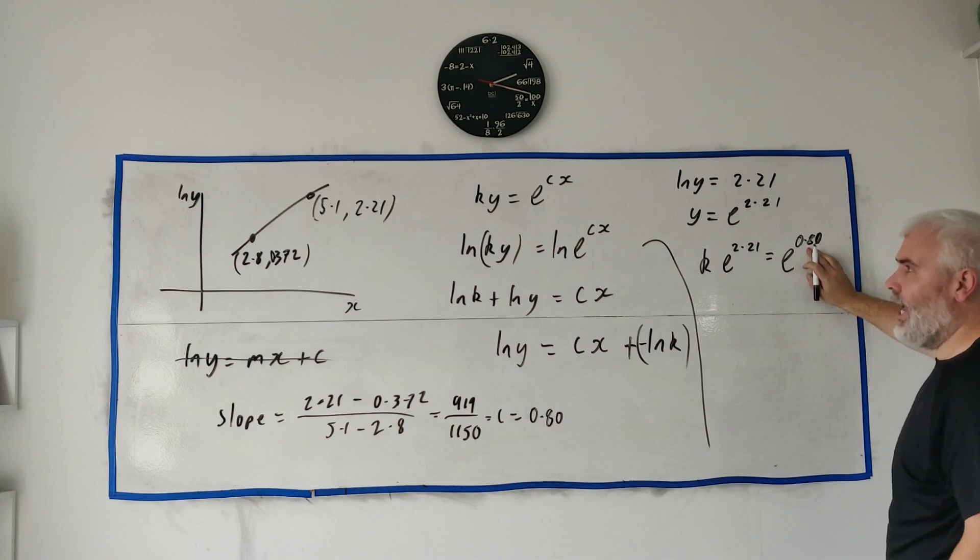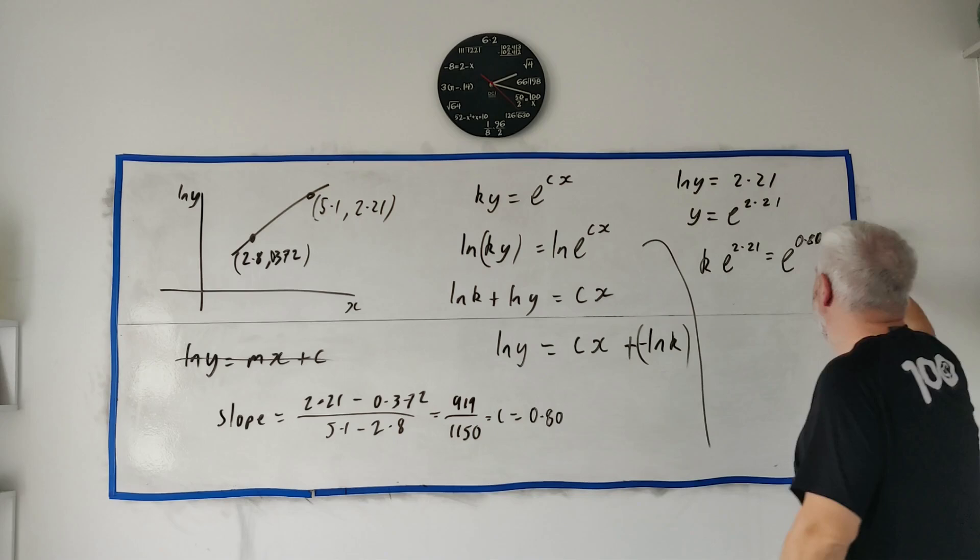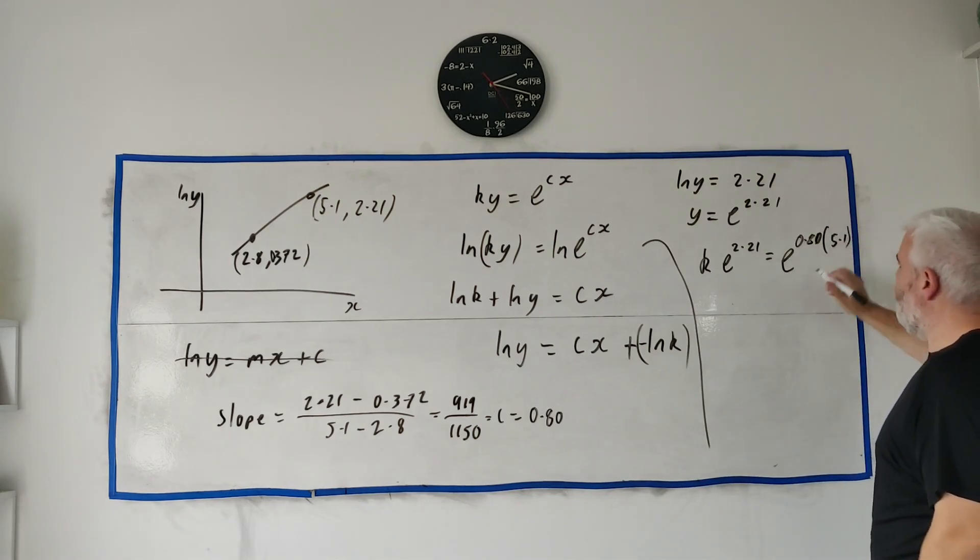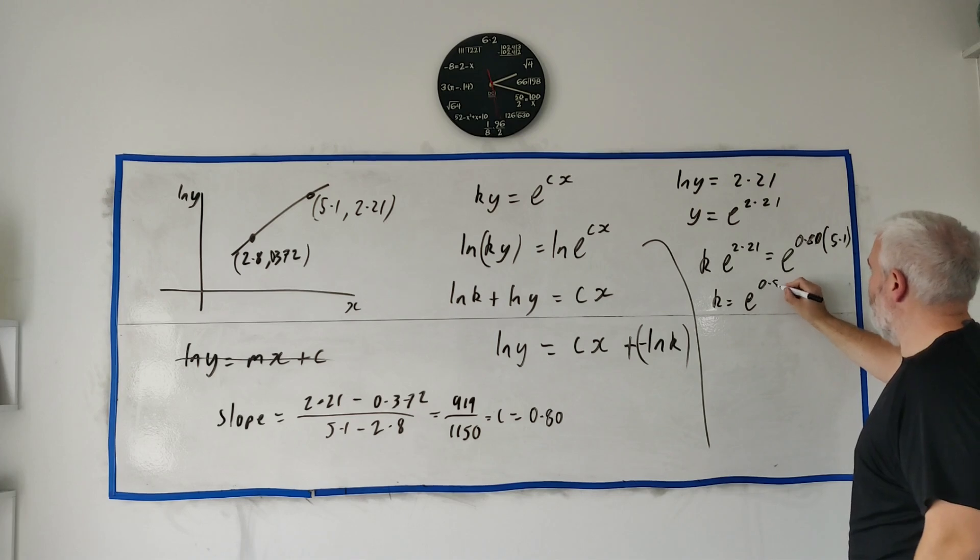That means k is equal to e to the power of 0.8 times 5.1 all divided by e to the power of 2.21.